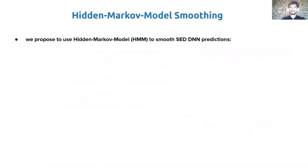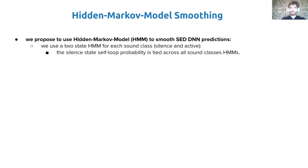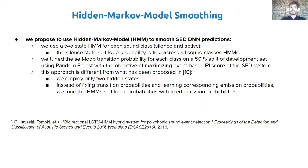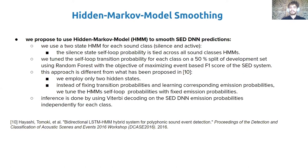We also propose to use Hidden Markov Model smoothing instead of median filtering to smooth the DNN sound event detection predictions. A two-state HMM is used for each class: one state for silence, another for active sound. The HMMs are independent; however, the silence self-loop probability is tied for all classes. The self-loop probability is tuned for each class on a 50% split of the development set, with the objective of maximizing event-based F1 score. This approach differs from a full-fledged DNN-HMM hybrid system because, instead of fixing transition probabilities and learning emission probabilities, we tune the HMM's self-loop probabilities with fixed emission probabilities. Inference is done using Viterbi decoding on the SED DNN emission probabilities independently for each class.